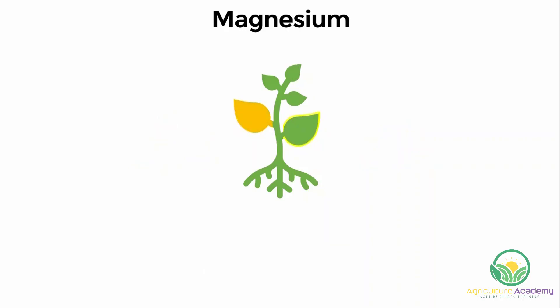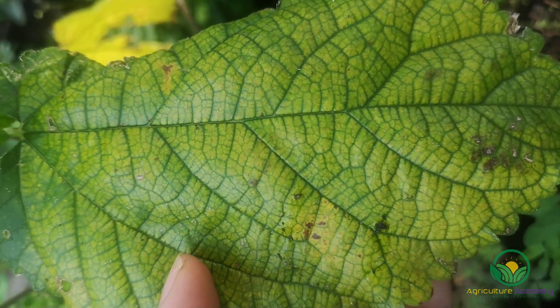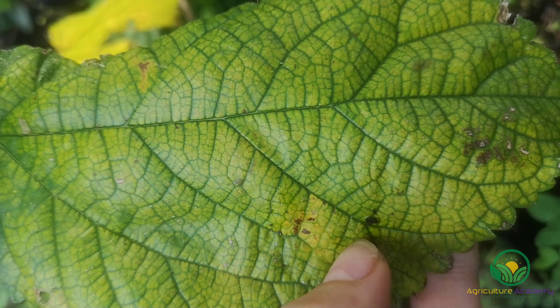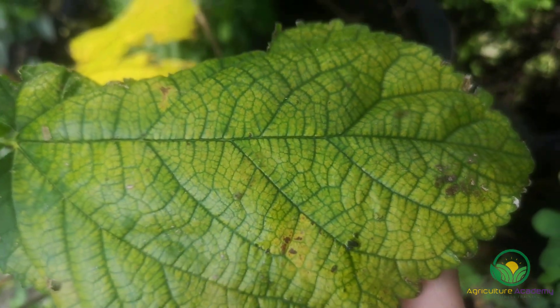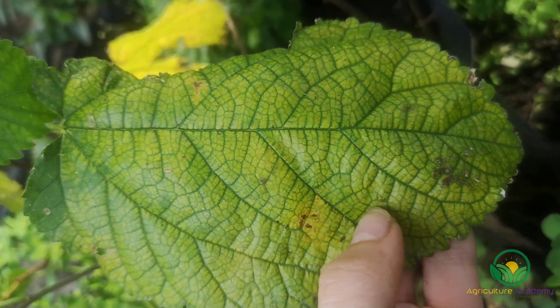Magnesium deficiencies can also cause a yellowing of leaves and leaf edges. As mentioned earlier, chlorophyll is a chelate containing an essential magnesium atom. Like nitrogen, magnesium can be translocated to younger leaves, so the older leaves will start to yellow first. Other symptoms include interveinal chlorosis — this describes the state of leaves when the veins remain green but the areas between the veins turn yellow. Sandy, light soils can easily leach magnesium, especially during periods of heavy rain or over-irrigation.